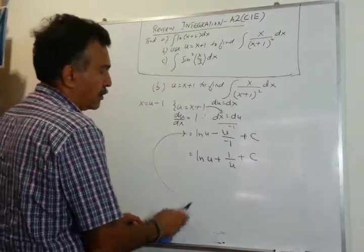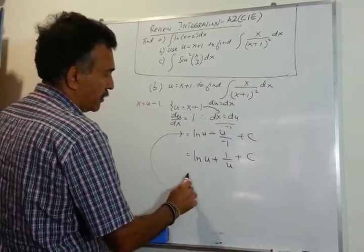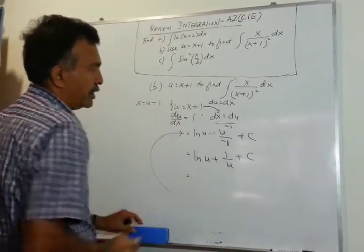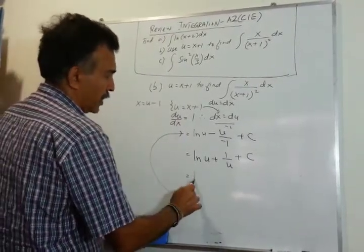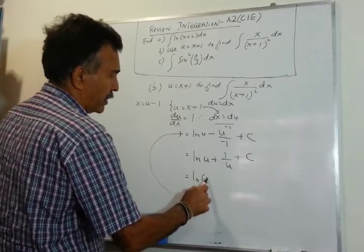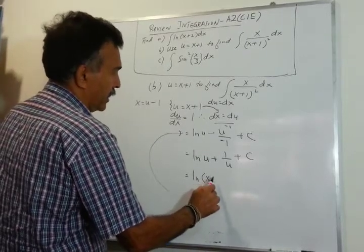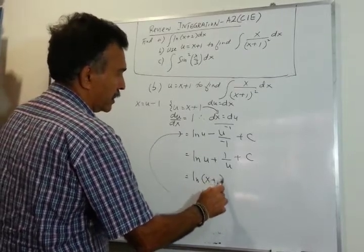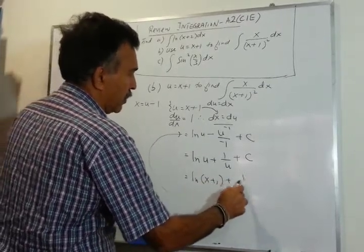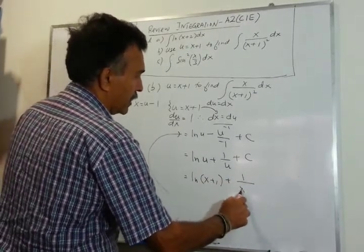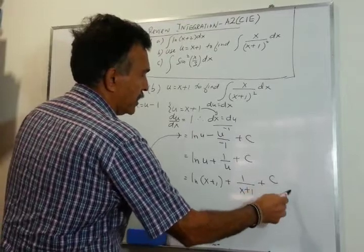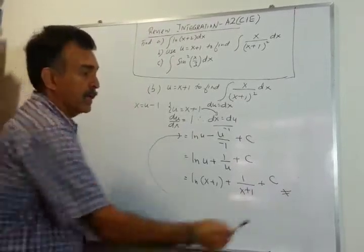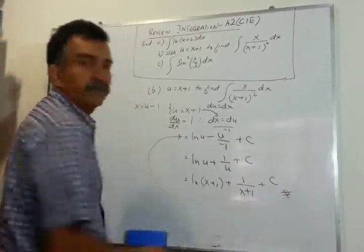Now let's write the variable back in terms of x. We get ln(x+1) plus 1 over (x+1) plus c, and we are done. Don't forget the constant of integration c.